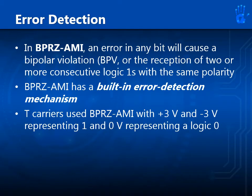Error detection: in BPRZ-AMI, an error in any bit will cause a bipolar violation. Bipolar violations, or BPV, are the reception of two or more consecutive logic ones with the same polarity. BPRZ-AMI therefore has a built-in error detection mechanism. T-carriers use BPRZ-AMI with positive 3 volts and negative 3 volts representing logic 1, and 0 volts representing logic 0.